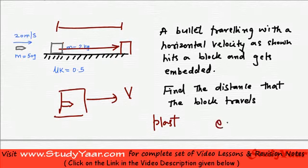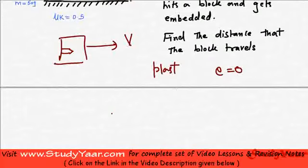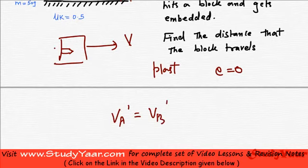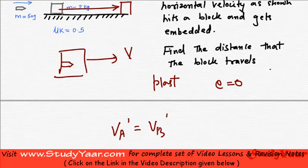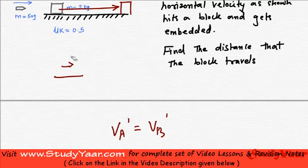So what you have is your e is equal to zero. Your VA dash is equal to VB dash. And they both together have a common final velocity after impact due to this plastic collision. So let's see how we are going to proceed in this kind of a problem.